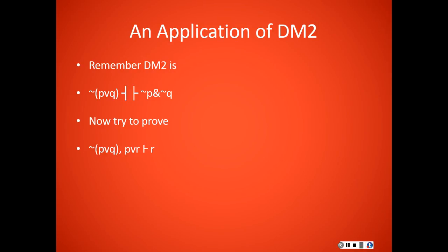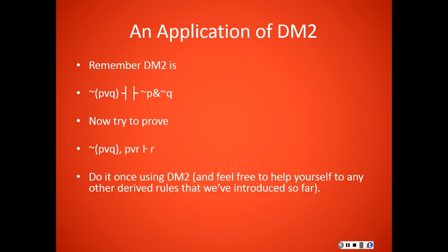So now try to prove it is not the case that P or Q, P or R, therefore R. So do this once using De Morgan's law 2 and feel free to help yourself to any other derived rules that we've introduced so far. And then do it again using only primitive rules. This has also been given to you as a homework assignment.